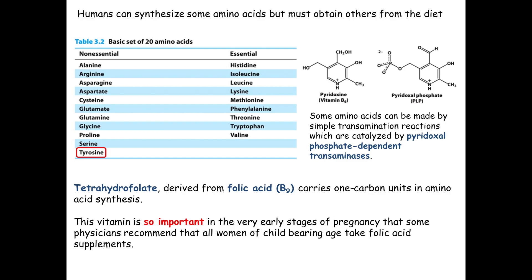That amino group transfer is called a transamination reaction, and it requires a cofactor called PLP — pyridoxal phosphate — made from vitamin B6, which is pyridoxine. All we do is add a phosphate to pyridoxine to make pyridoxal phosphate. It's a critical cofactor used by the enzyme doing this reaction — a transaminase. There are many PLP-dependent transaminases, most of them involving amino acids. We also need to move around some one-carbon units, which requires folic acid — vitamin B9 — in our diet, and tetrahydrofolate for many of these amino acid synthesis reactions.